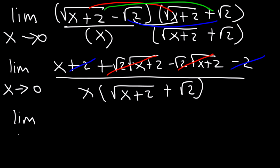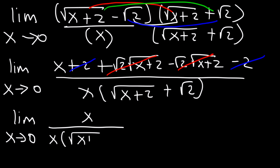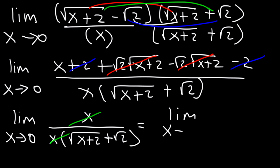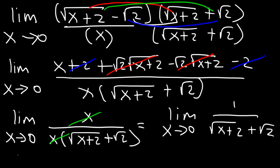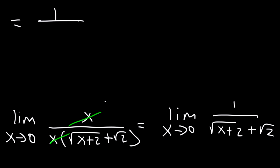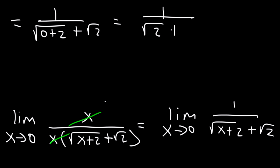So what we have left over after cancellation is the simplified expression. At this point, we can cancel x. Once the x in the denominator is gone, we can use direct substitution. So this equals 1 over square root of 0 plus 2 plus root 2. That gives 1 over square root of 2 plus square root of 2. Since the coefficient in front of both is 1, that's 1 over 2 square root of 2.